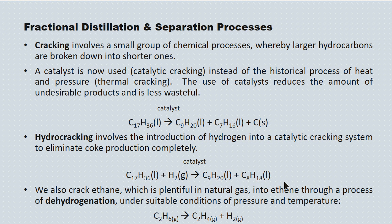We also crack ethane into ethene — going from C2H6 to C2H4, a saturated compound to an unsaturated compound. This is also referred to as dehydrogenation, which is probably a more suitable name. We're removing a hydrogen molecule and converting a single bond into a double bond. The reason we do this is that ethane is quite plentiful in the natural gas fraction, while ethene is less common but much more desirable industrially — it goes on to be used in manufacturing plastics.